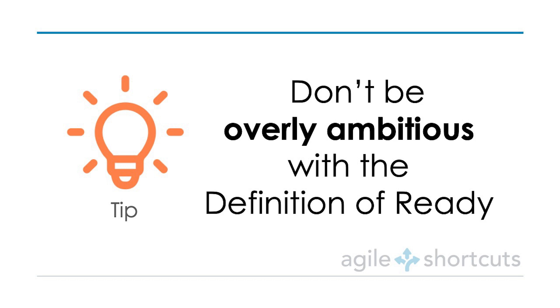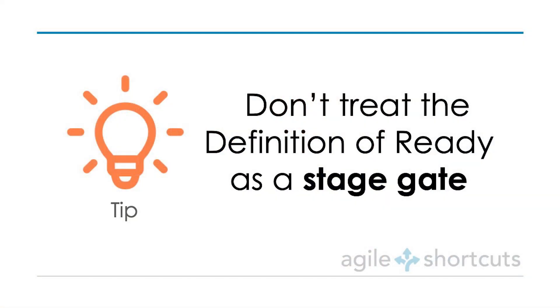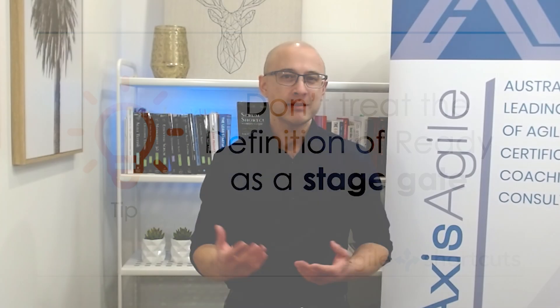Two more tips: first, don't be overly ambitious with the Definition of Ready. Having none is a problem, but having too many items on the list creates a bottleneck and slows the team down — coach your team and the product owner accordingly. Second, don't treat it like a strict stage gate. Look at it as guidance. If a team doesn't meet all the criteria, you might still be able to start working on it. Relax the Definition of Ready if needed rather than blocking the team.